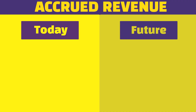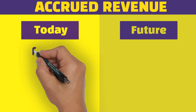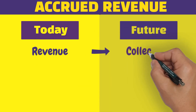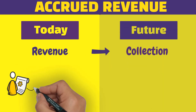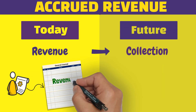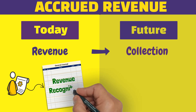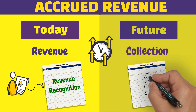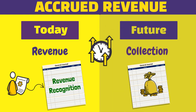We have accrued revenue when a company earns revenues before collecting that revenue. The earned revenue is recorded first, then the cash collection from this revenue is recorded later when it is collected.